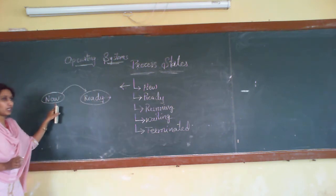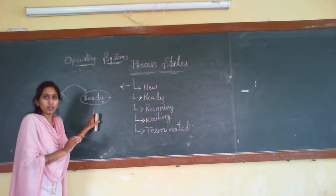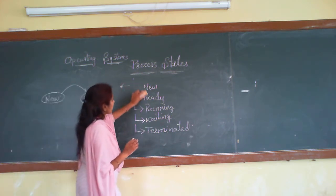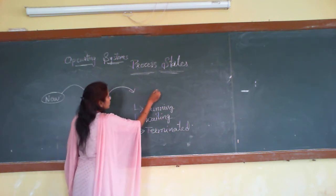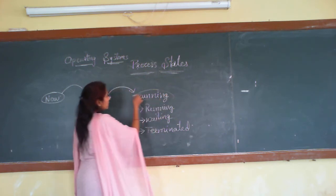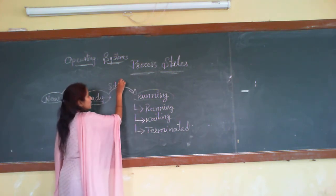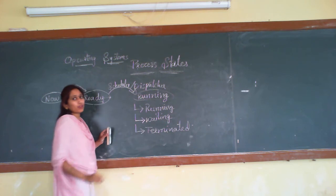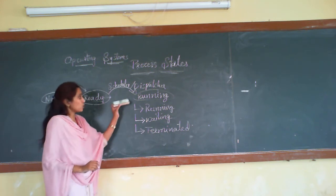In the new state, the process is just being created. In the ready state, the process is created and ready for execution. Whenever it is ready for execution, we move that process to the running state — meaning the process is assigned to the CPU. Here there is a concept of a dispatcher, which dispatches the process from the ready queue to the running state.